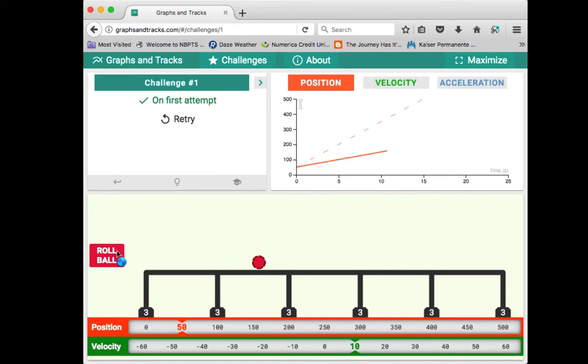Now I can see I'm getting a straight line, but it doesn't have the right slope. The velocity we're trying to reach is much greater. If I look at this carefully, I can see that at about 10 seconds, the ball would be at about 350 centimeters.